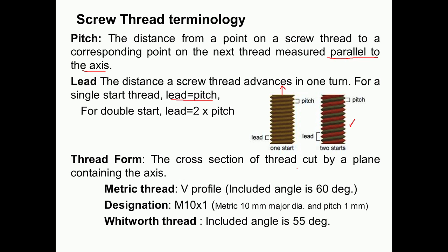Thread form is the cross section of the thread cut by a plane containing the axis. For example, in the case of metric thread we have a V profile, and the included angle — known as thread angle — is equal to 60 degrees. In the case of Whitworth thread, the included angle is 55 degrees. Metric threads are designated as follows: M10×1, where M indicates metric type, 10 indicates 10 mm major diameter, and 1 indicates a pitch of 1 millimeter.